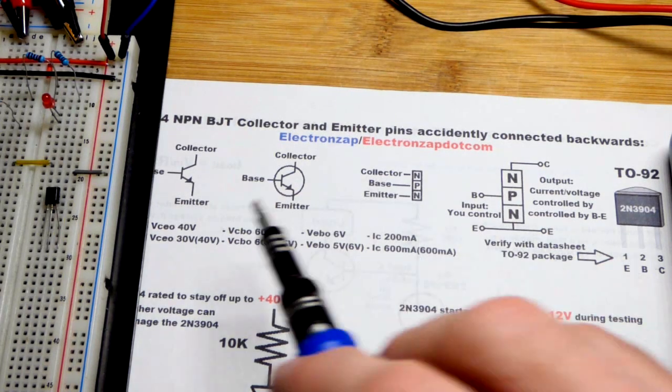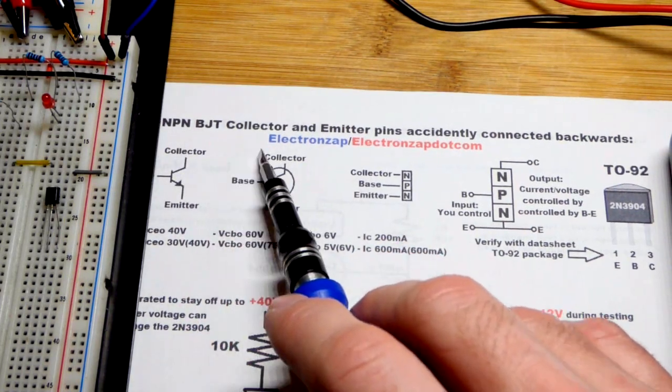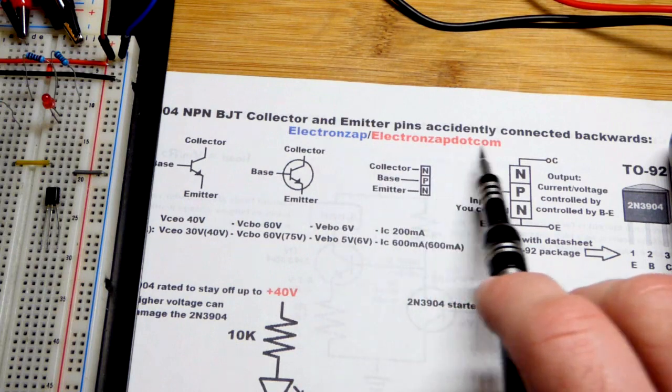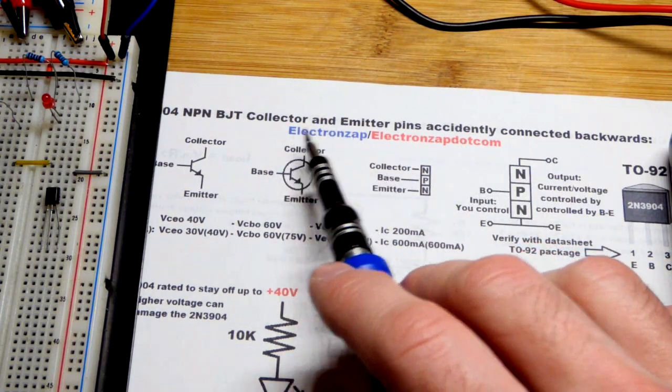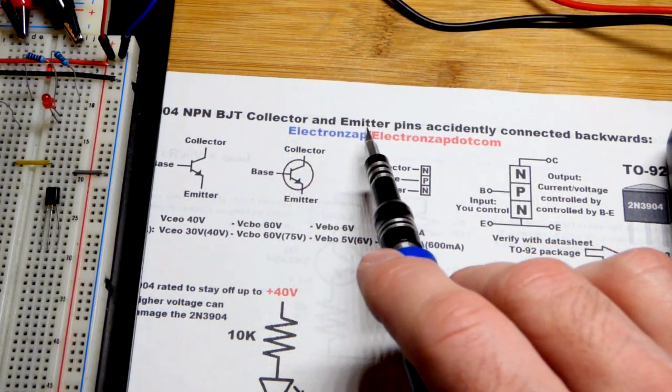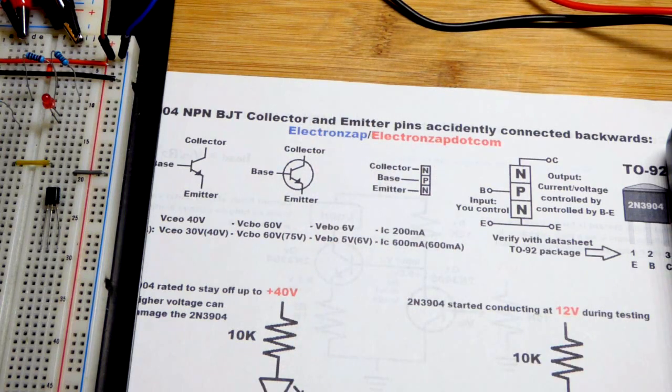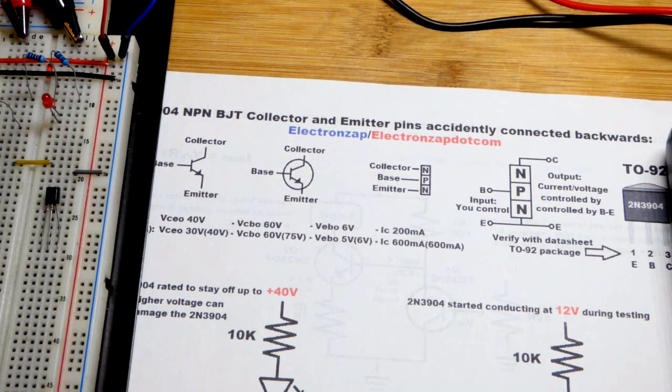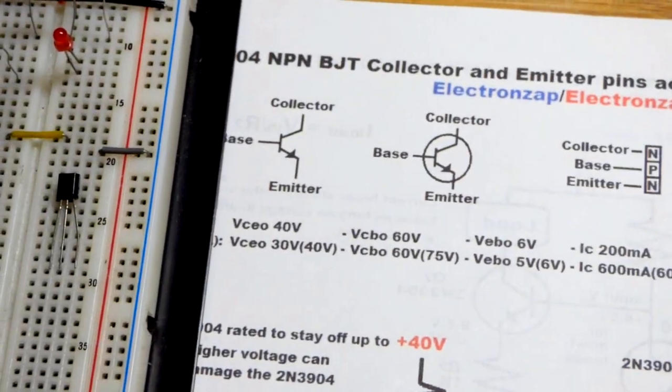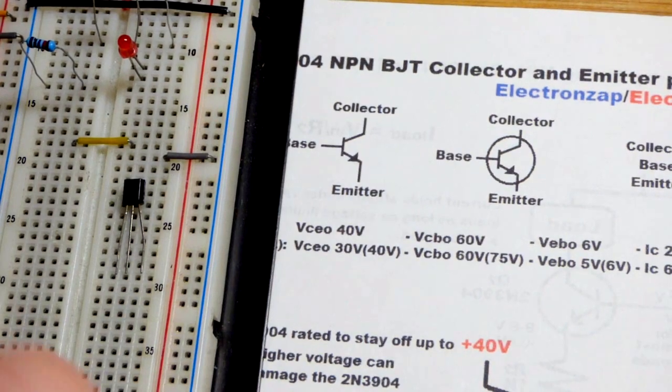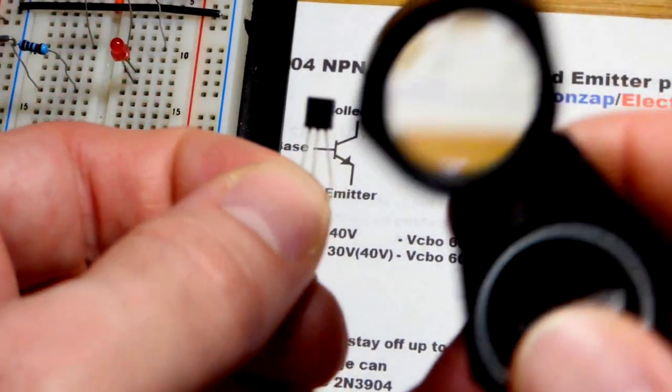So now in this video, we're going to look at the NPN bipolar junction transistor accidentally connected backwards, which means you put the collector where the emitter should be and vice versa. I'm going to make this video assuming you don't know anything about transistors, so this will just be a quick review if you already know.